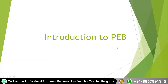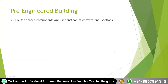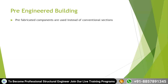PEB stands for pre-engineered building. These are prefabricated components used instead of conventional sections like standard ISMB and ISMC sections — channel sections, angle sections ISA — which are already available in the market. As per design requirements we use standard sections, but sometimes it is not economical to use them for large industrial sheds, so in certain cases we use prefabricated components where, with the help of plates, we manufacture and fabricate these components as per our requirement.